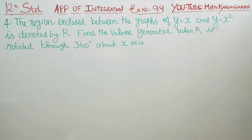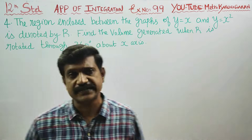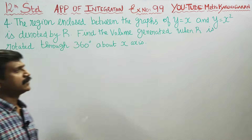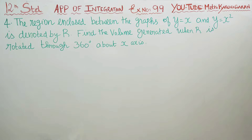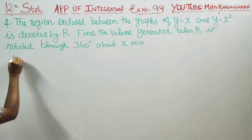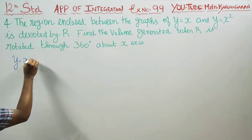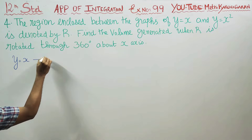Dear 12th standard students, in exercise number 9.9, question number 4, we find the region enclosed between the graphs y = x and y = x². Here, y = x is a straight line passing through the origin. This is graph number 1.